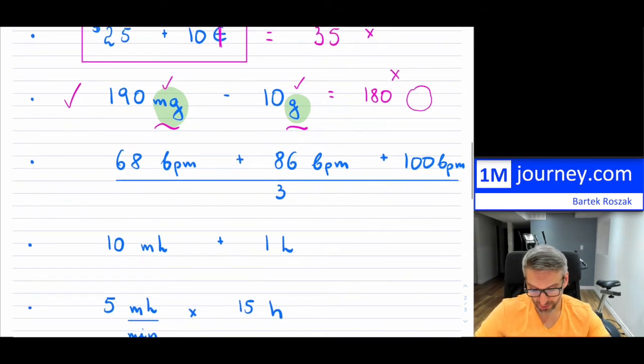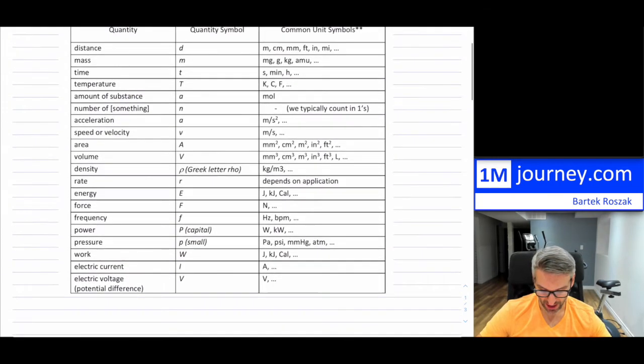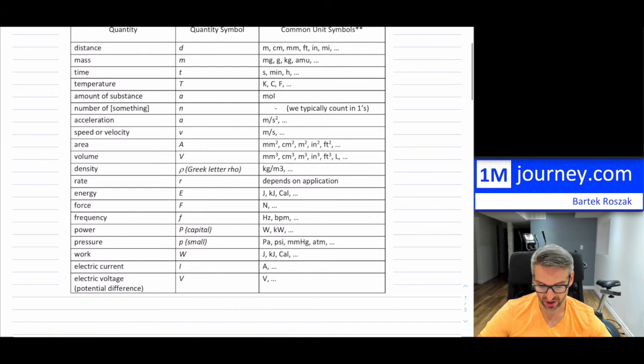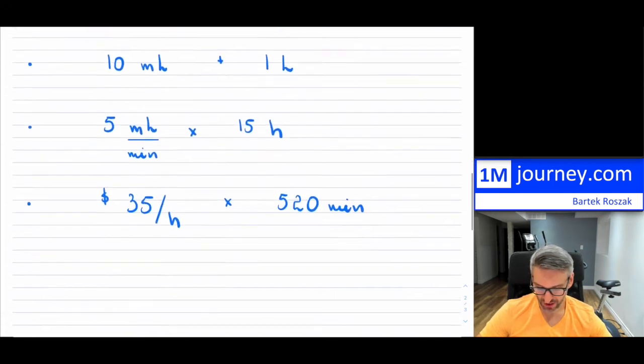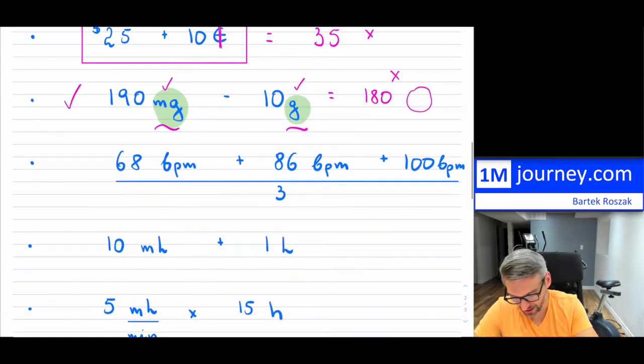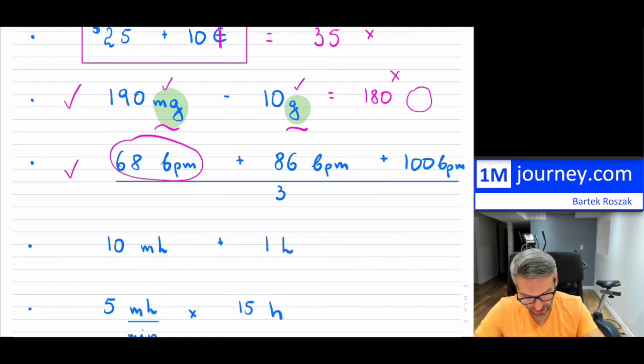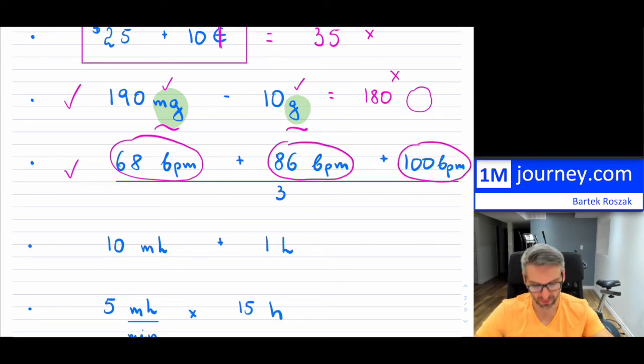Now, in the third example, so this one has 68. It says BPM. Now, what is BPM? You can look up in the table if you want. So in this particular table, BPM is actually beats per minute in this case. So we're solving for some kind of frequency in here. And now, so notice, we have 68 beats per minute here. We want to add it to 86 beats per minute. And we want to add it to 100 beats per minute. This is consistent. In the denominator, we can go ahead and add these up because everything is in beats per minute.